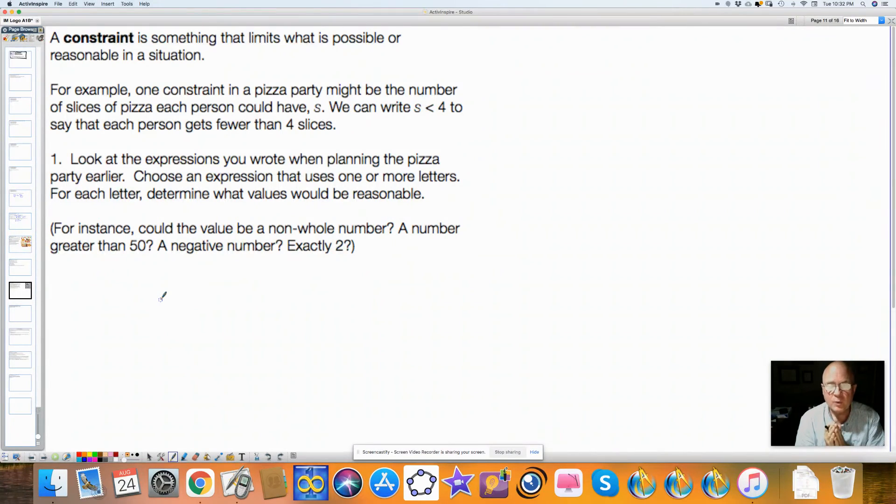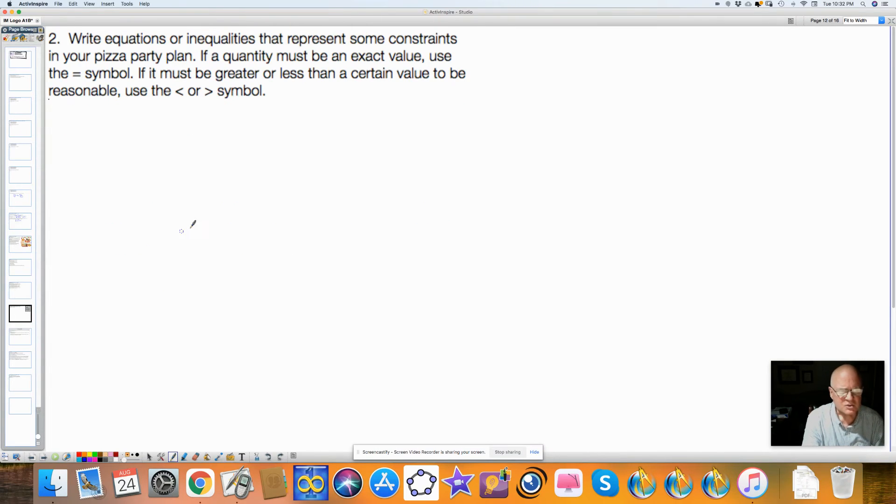Anyway, here's the big point, one of the big points of this lesson, constraints. A constraint is something that limits what is possible or what is reasonable in a situation. For example, maybe you say you have to eat less than four pieces. So you say the number of slices would be less than four pieces or something, less than four. Maybe you look at what you wrote, and you see, like, for instance, a number greater than 50 or whatever. You can write constraints with a less than or greater than symbol.